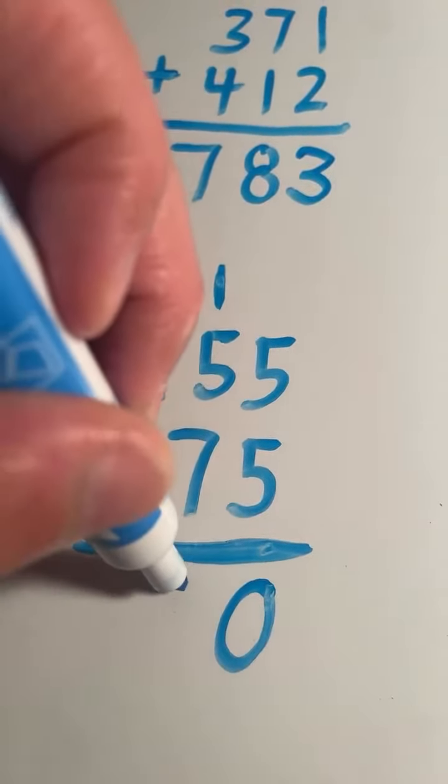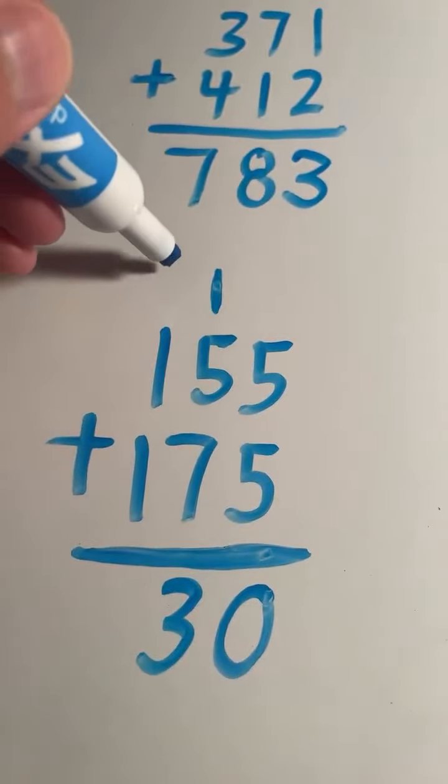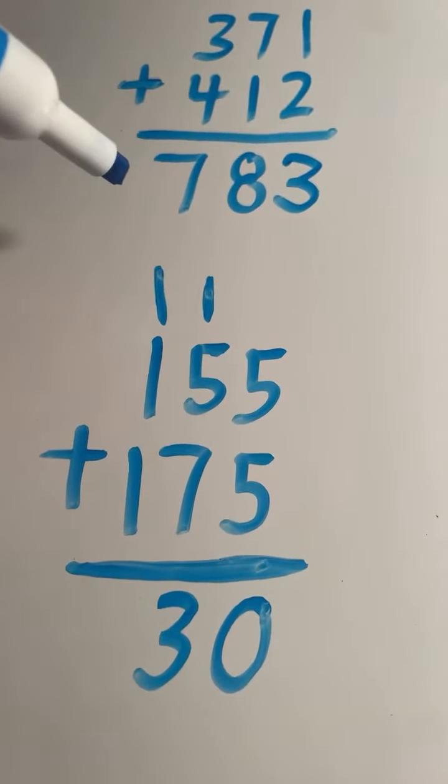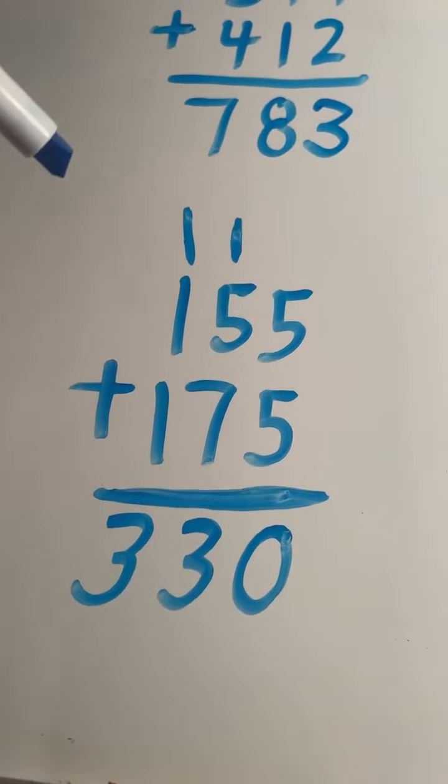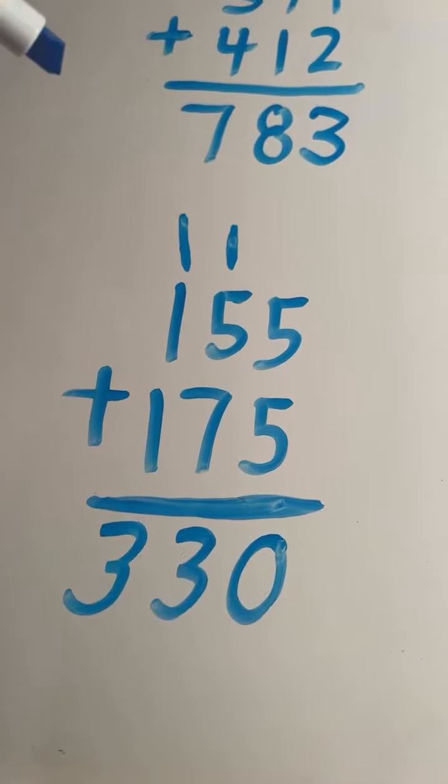One plus one plus one equals three, and we have our final answer: 155 plus 175 equals 330.